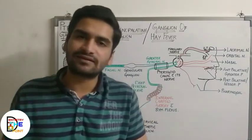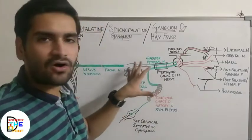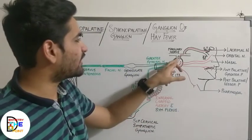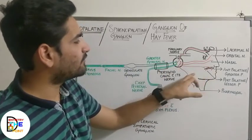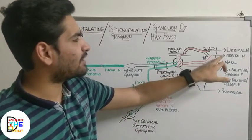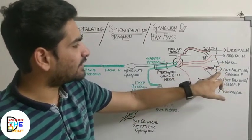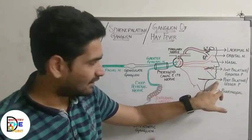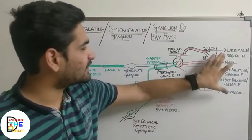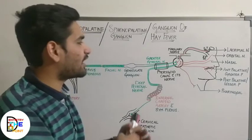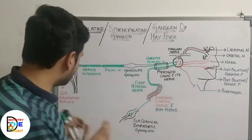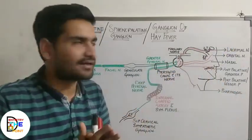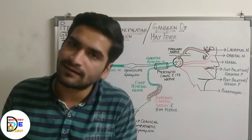The sensory supply of the pterygopalatine ganglion is through the maxillary nerve. The maxillary nerve relays in the ganglion and gives branches. The branches are: lacrimal, orbital, nasal, anterior palatine (also called greater palatine), posterior palatine (or lesser palatine), and lastly pharyngeal. These are the branches of the pterygopalatine ganglion carrying sensory supply. In total, this covers the parasympathetic, sympathetic, and sensory components of the whole pterygopalatine ganglion.